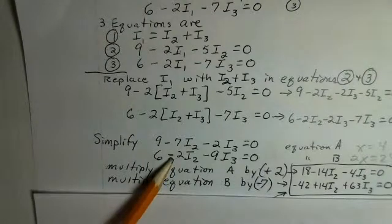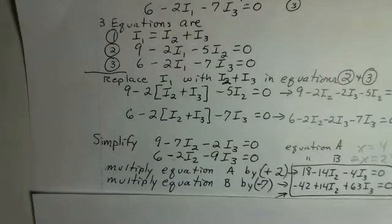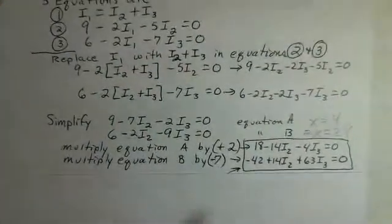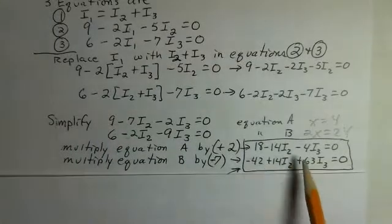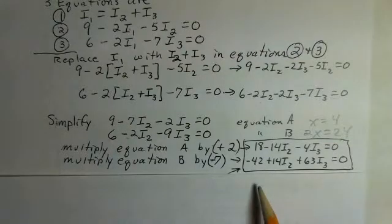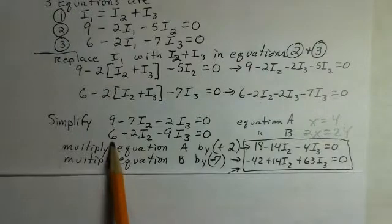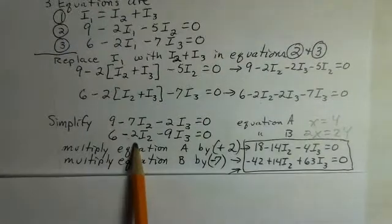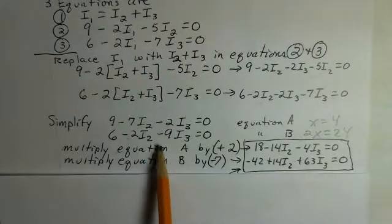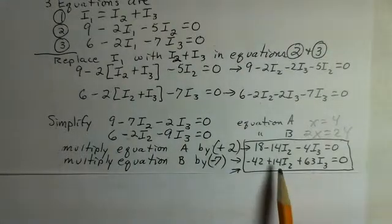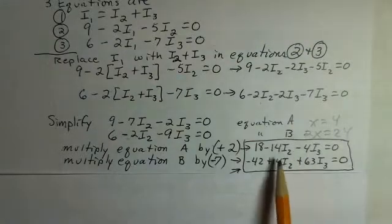And you can observe those results in the box over here. We have a result after multiplying by the 2: 18 minus 14 I2 minus 4 I3 and equation B becomes minus 42. Now that's the 6 times the minus 7, plus 14 I2, and then the minus 7 times the minus 9 generates a plus 63. Now we're in a position we can add these two equations. We can add equations, it's perfectly legal.